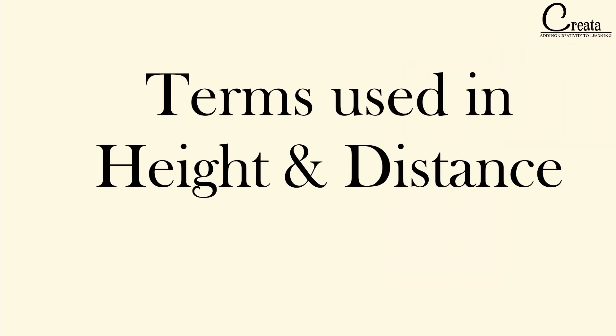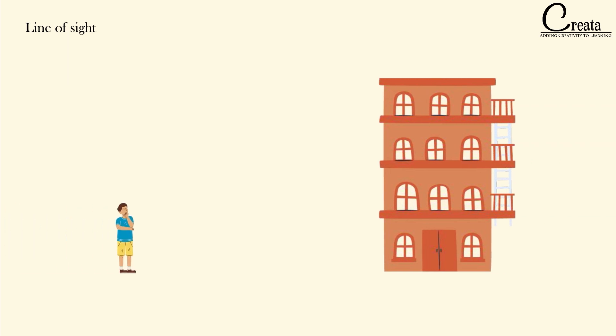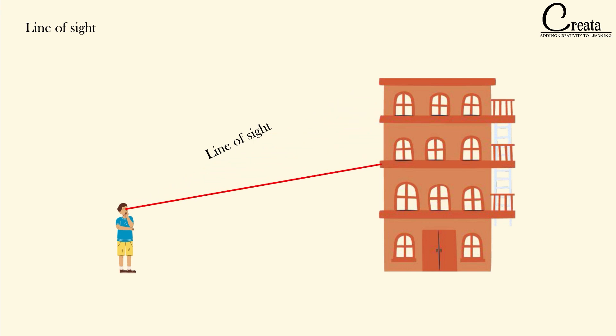Let's understand the basic terms related to this concept. The concept name is 'Height and Distance.' The first term is the line of sight. To understand this, let's take a building with a person standing in front of it, looking at the top. The line of sight is the imaginary line formed through that person's vision. To understand it better, imagine that person has a laser in his eyes — wherever he looks, the laser moves in that direction. That laser beam is the line of sight.